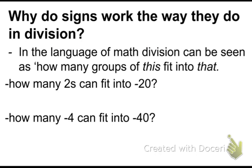Why do signs work the way they do in division? Why do we end up getting this answer? Now, I could go the easy way and say, well, it's the opposite of multiplication, right? We use the same rules as multiplication as division for finding the sign of an integer because multiplication and division are really well linked.